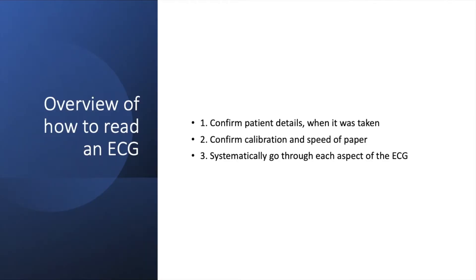Before we actually read an ECG, it's important to confirm a couple of details. The first is the patient's details — have we got the right patient and the right ECG? It's also important to check when it was taken; if a patient is presenting with chest pain now but the ECG was taken two days ago, it's unlikely to be helpful. Then confirm the calibration and paper speed, and finally go through the ECG itself.